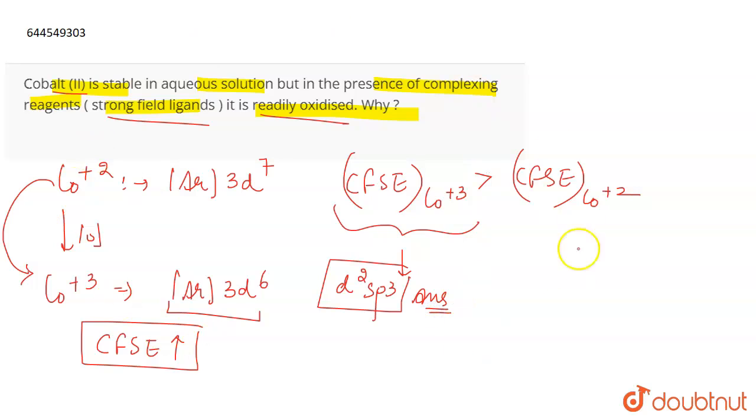So therefore, this is the correct explanation. The main reason for this is the more CFSE value of Co plus 3 as compared to Co plus 2. It is more stable and it oxidizes readily. That's all for the question.